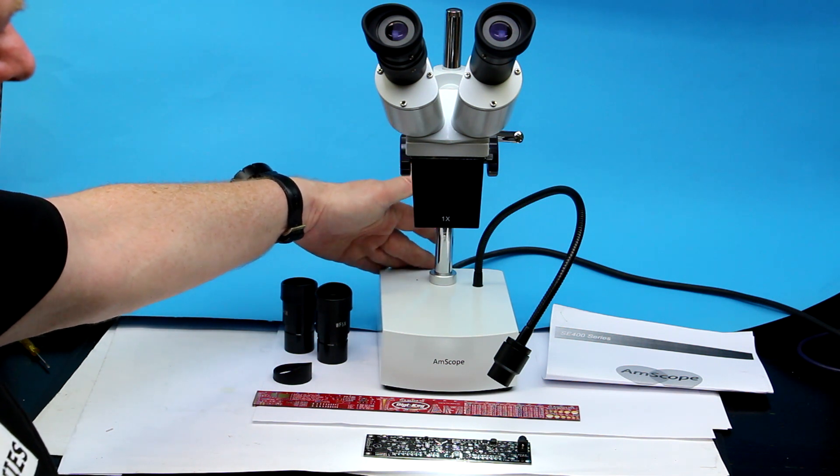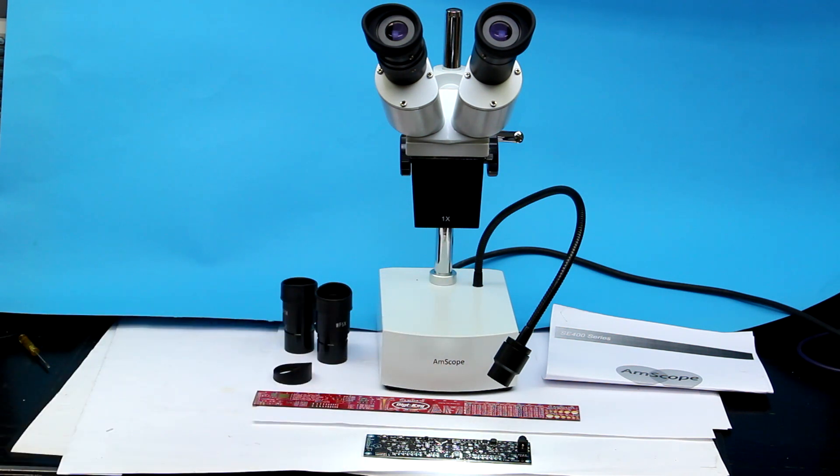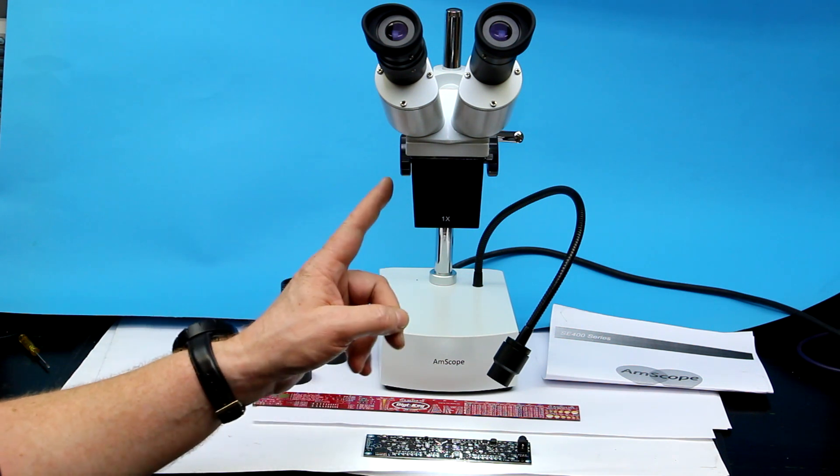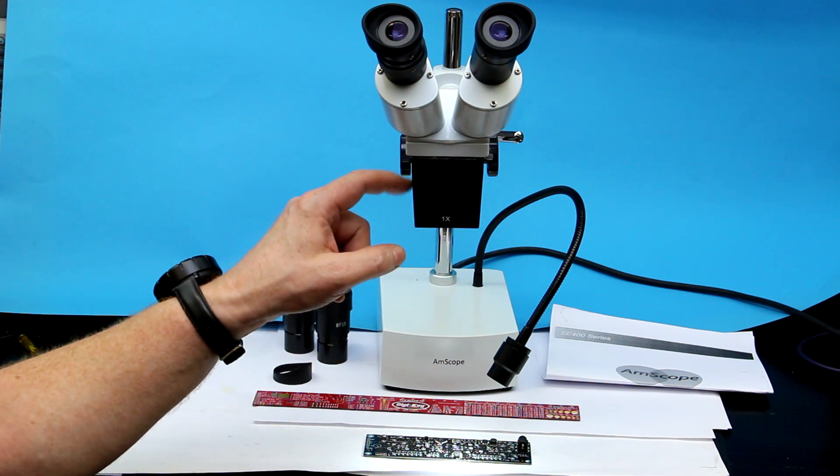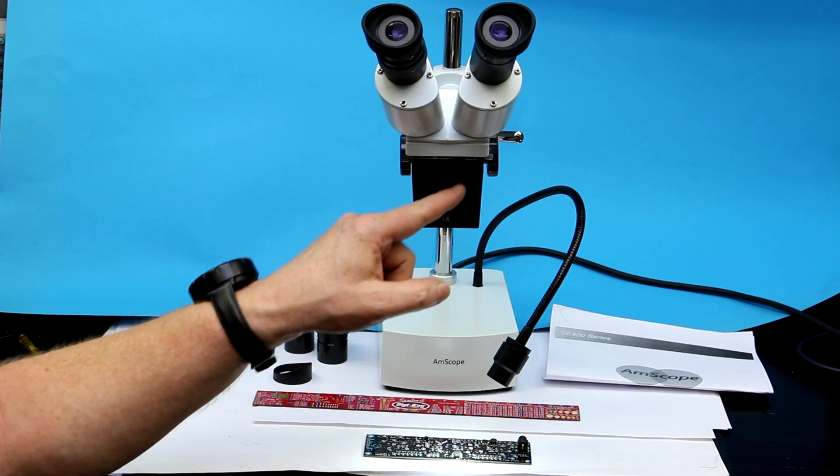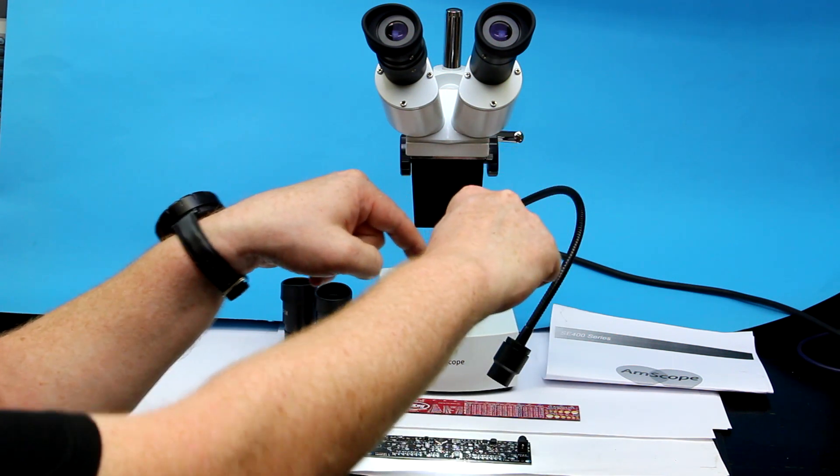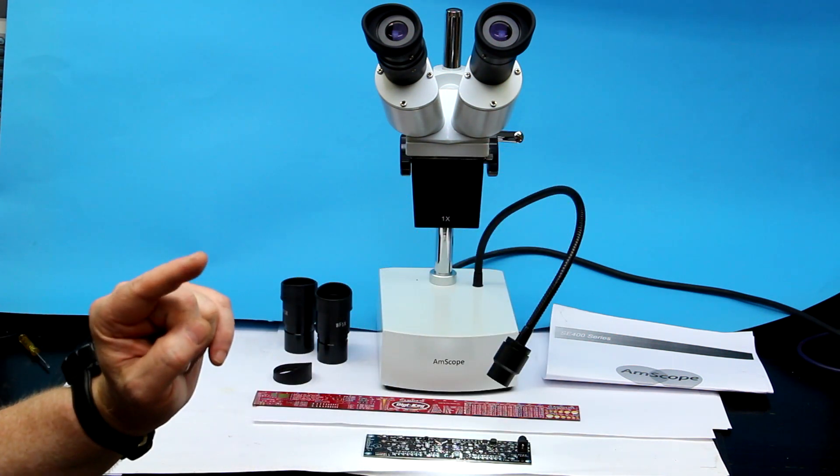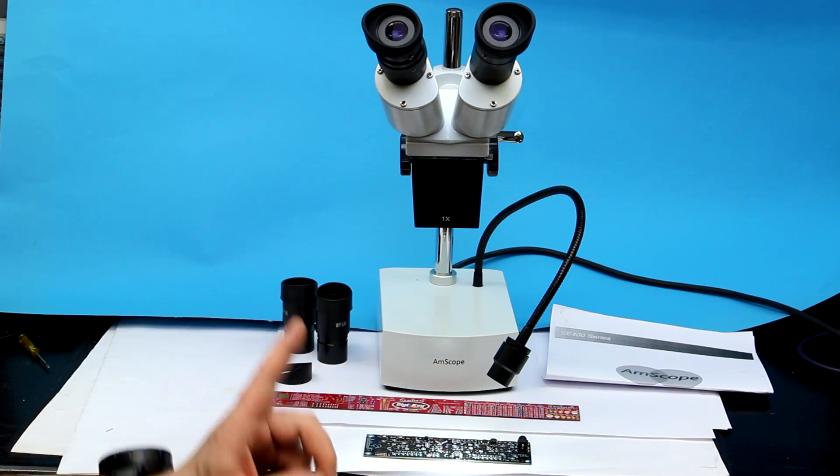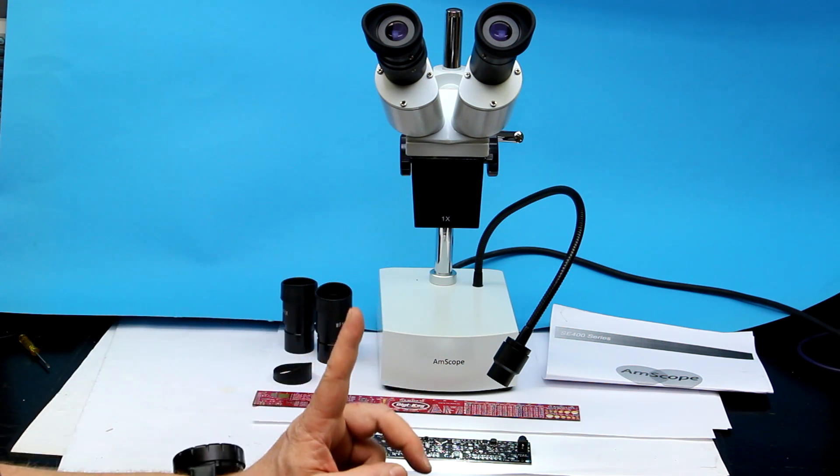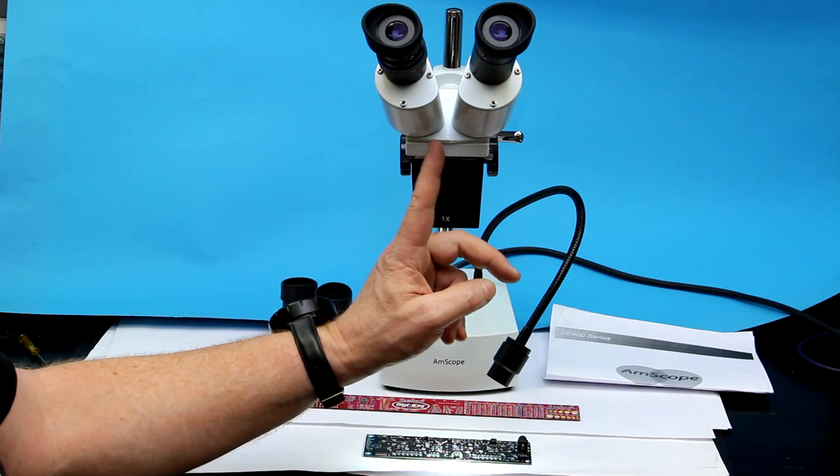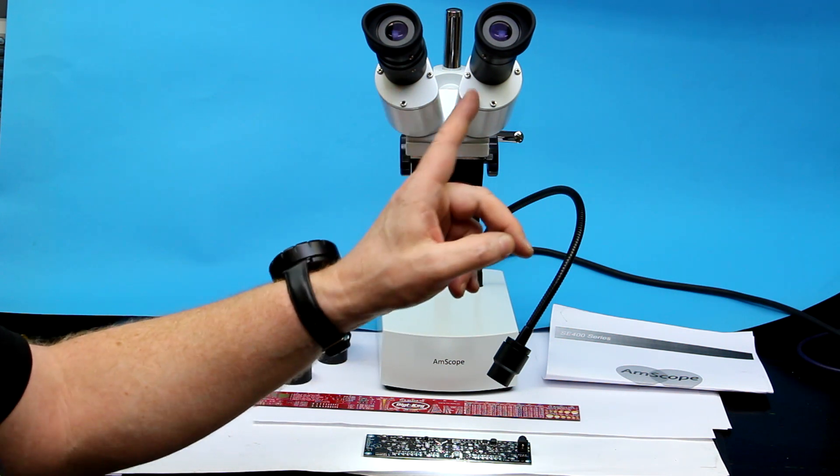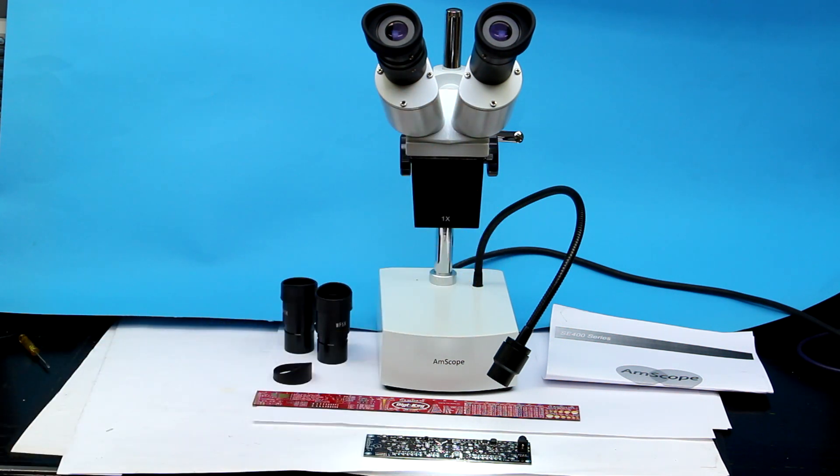Now this is a true stereo microscope. We will later take off here this cover and see that there are really two lenses at an angle so that you get a real stereo image. There are also microscopes that look like a stereo microscope but in fact have only one main lens and then a beam splitter, and so you have two eye ports but not a true stereo vision.